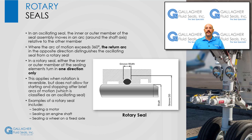In an oscillating seal, the inner or outer member of the seal assembly moves in an arc around the shaft axis relative to the other member. This motion tends to rotate one or the other member in relation to the O-ring. Where the arc of motion exceeds 360 degrees, as in multiple turns to operate a valve handle, the return arc in the opposite direction distinguishes the oscillating seal from a rotary seal.